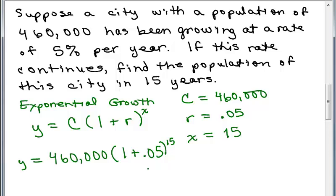Now, this is what you need to compute in your calculator. You could, of course, easily add the 1 plus 0.05 and then raise that to the 15th power. Now, if you have a calculator that does order of operations, you could put it in exactly like it looks, 460,000 times parentheses, 1.05 parentheses raised to the 15th power.